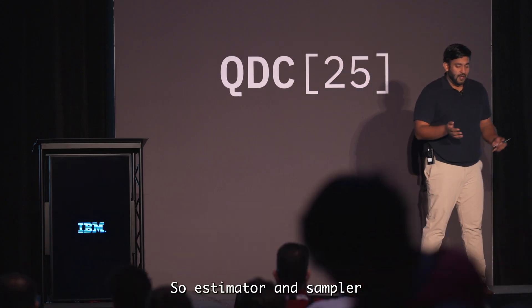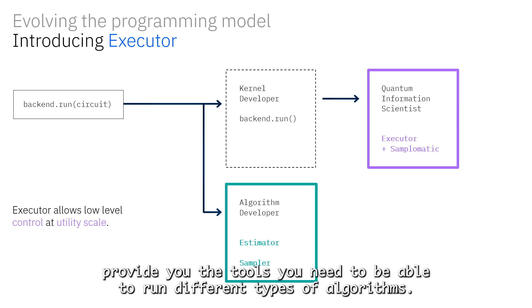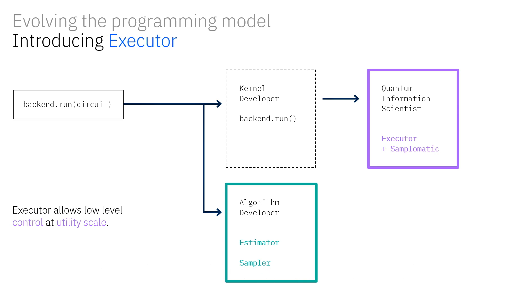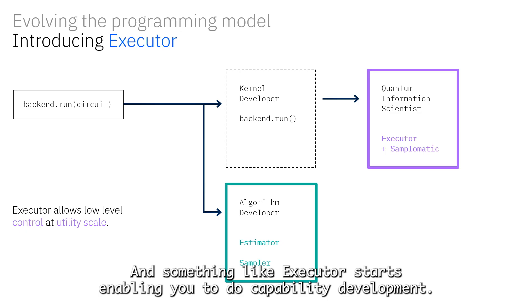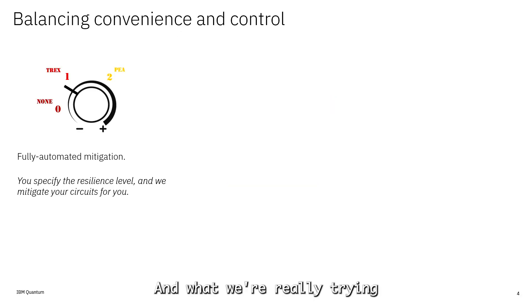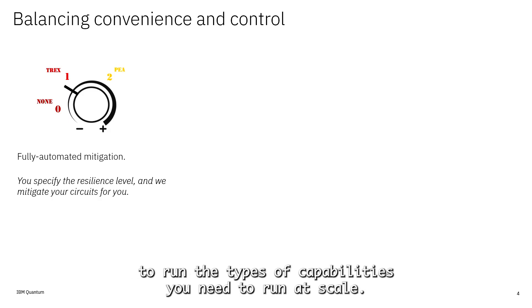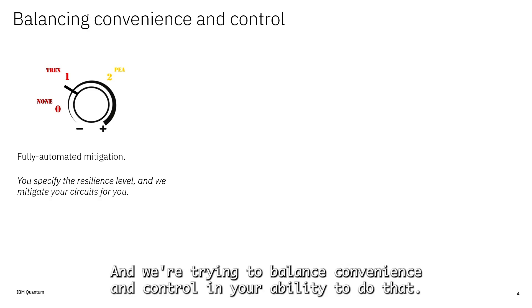Estimator and sampler provide you the tools you need to run different types of algorithms, and something like executor starts to enable you to do capability development. What we're really trying to do across these three interfaces is balance giving you access to run the types of capabilities you need to run at scale, and we're trying to balance convenience and control in your ability to do that.